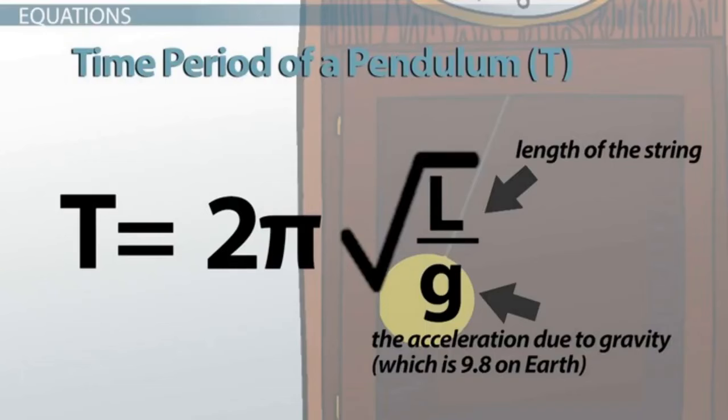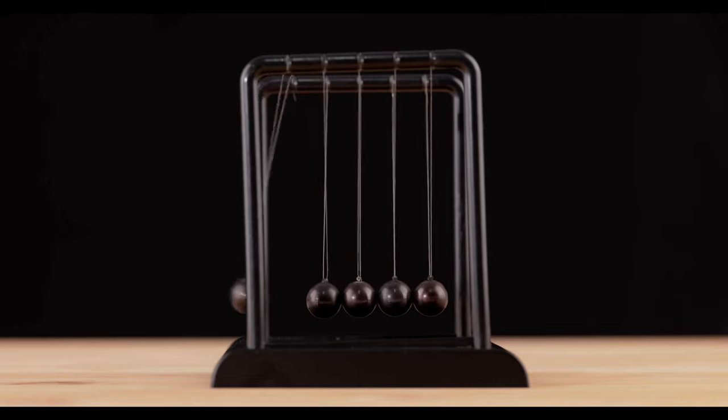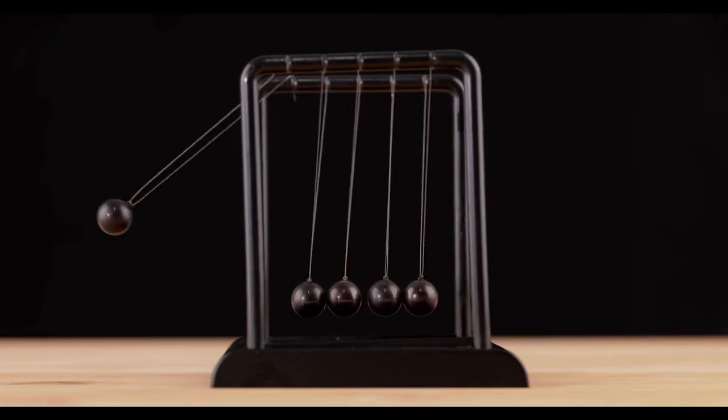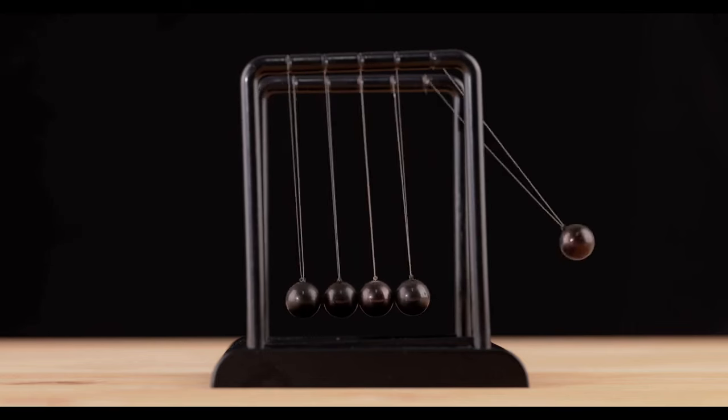It is an interesting property of any pendulum that its periodic time is governed by the length of the string holding the mass and not the weight of the mass itself. This is why a pendulum will keep swinging at the same frequency as the oscillations decrease in amplitude. The oscillation rate is independent of the amount of energy stored in it.